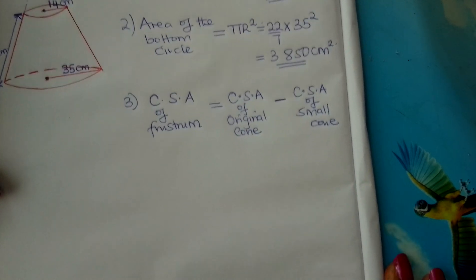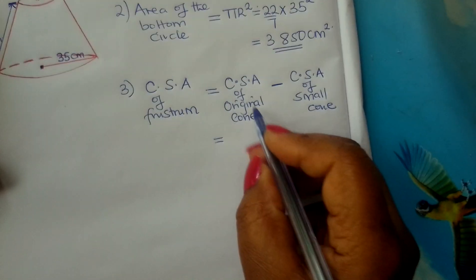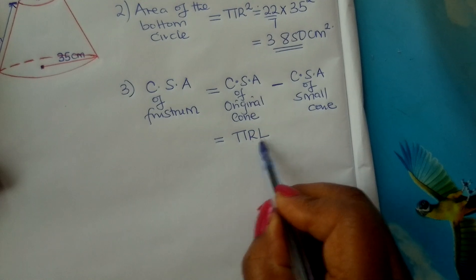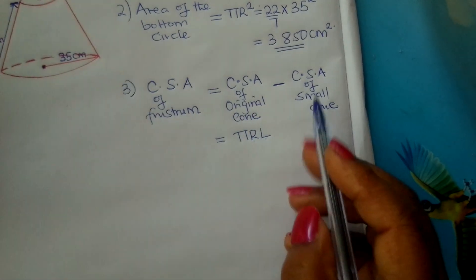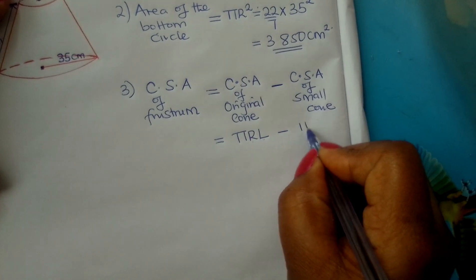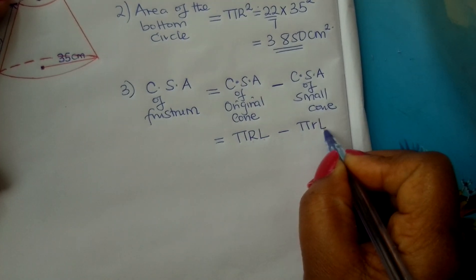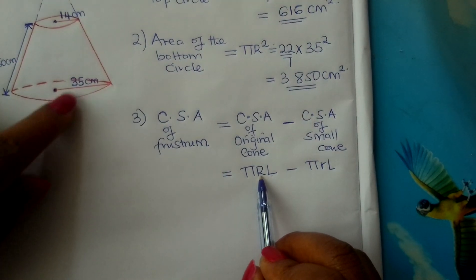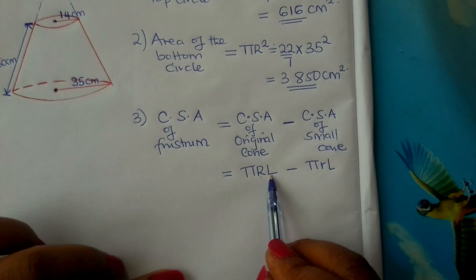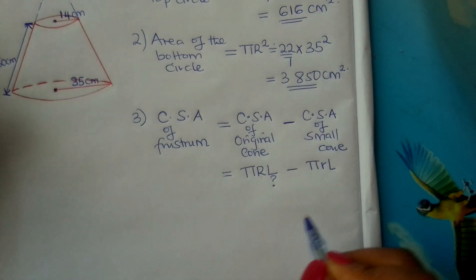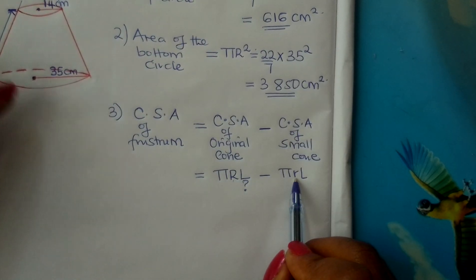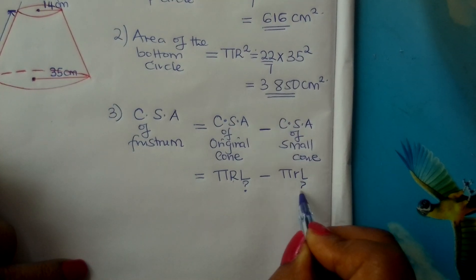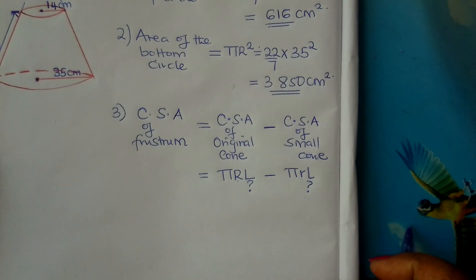The curved surface area of a cone is given by π R L, using capital letters for the original big cone, minus π r l using small letters for the small cone. Do we have capital R? Yes, it is 35. Do we have capital L? No. Do we have small r? Yes, it is 14. What about small l? We don't have the slant heights, so we need to calculate them.